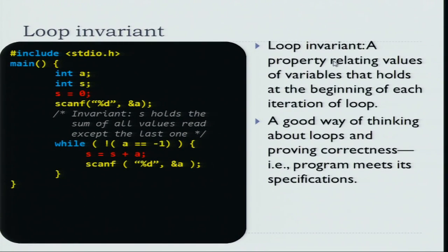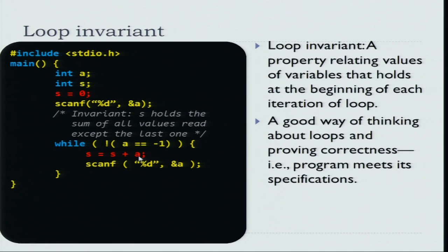Let us look at the property that we are interested in. There are two variables in the program, S and A, and both are involved in the loop, but the interesting property relates to S. What is the property that S holds with respect to the loop? We can see that S holds the sum of all values read so far except the last value. Is that true the first time we enter the loop? Yes, because S was initialized to 0 and you had actually read one number — it is true that S holds the sum of all values except the first one. At any point when you enter the loop, you sum the last value that was read and read one more number, so S still holds the sum of all values read so far except the last one.